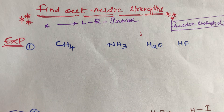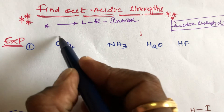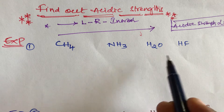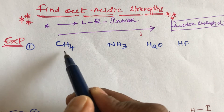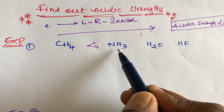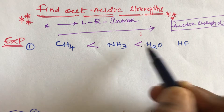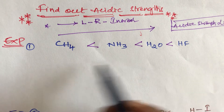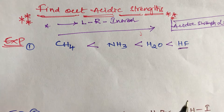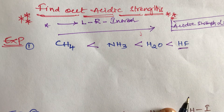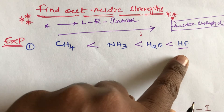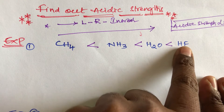According to periodic properties, in a period from left to right acidic strength increases. So the order is: CH4 is less than NH3, NH3 is less than H2O, H2O is less than HF. HF is the most acidic. Acidic strength is directly proportional to electronegativity, and fluorine has the highest electronegativity.